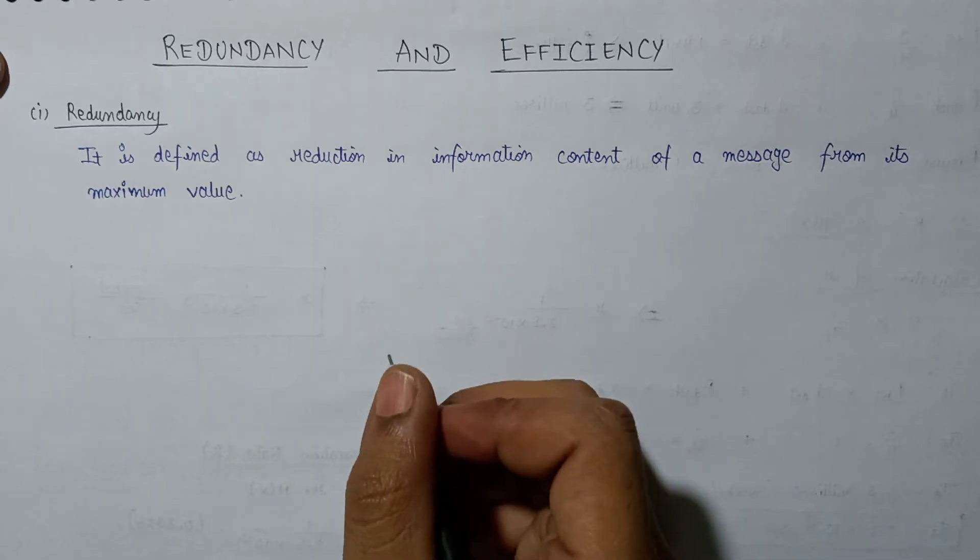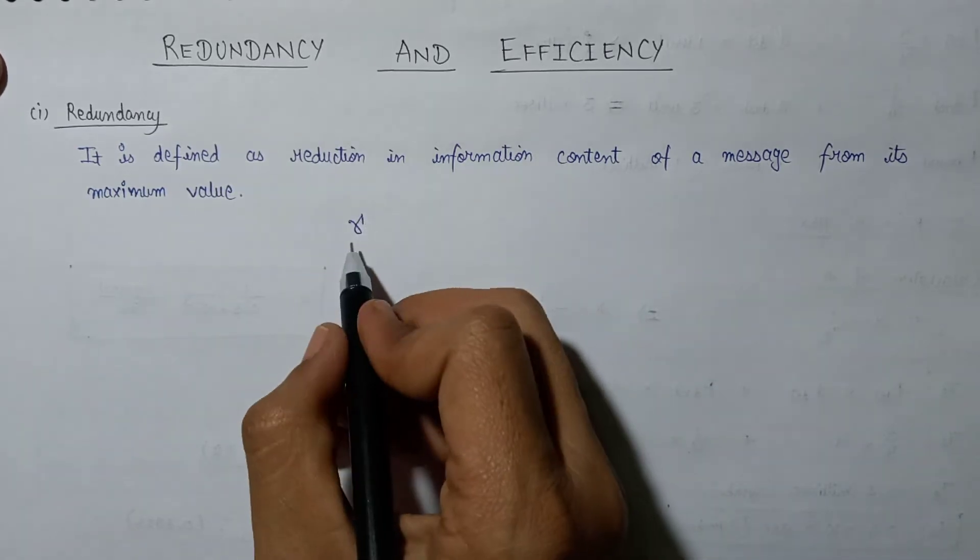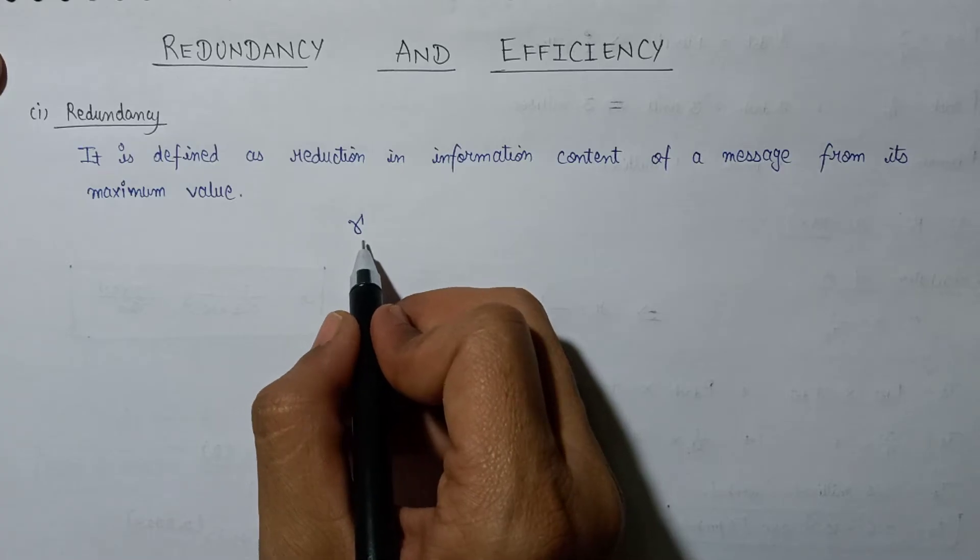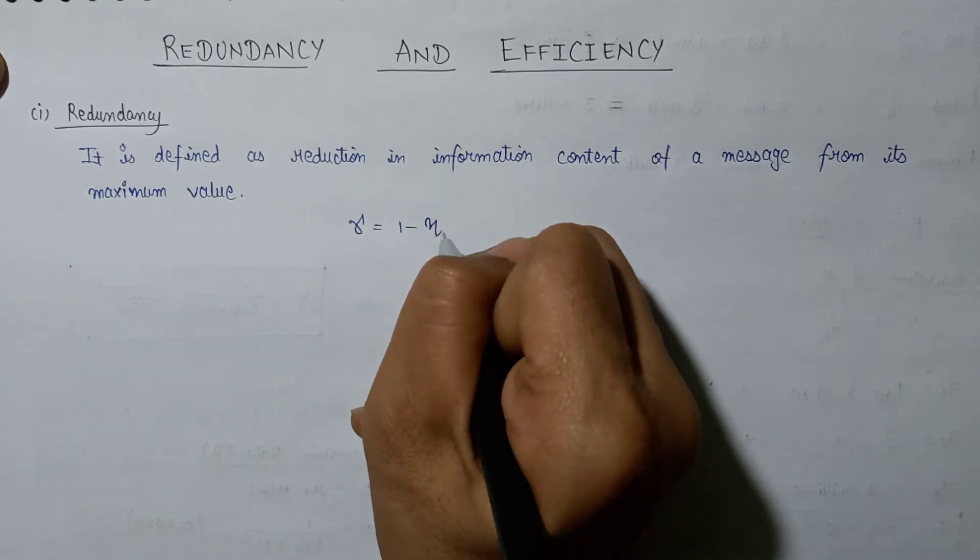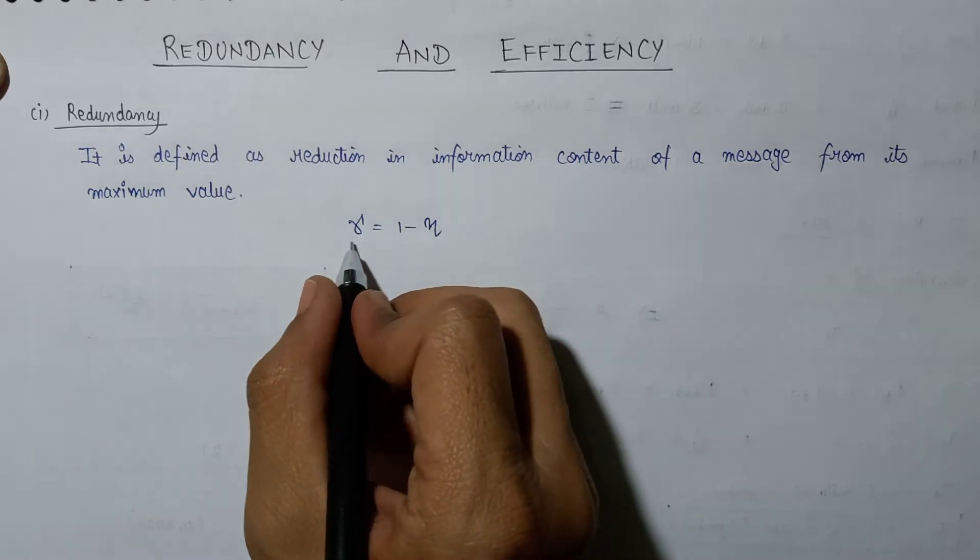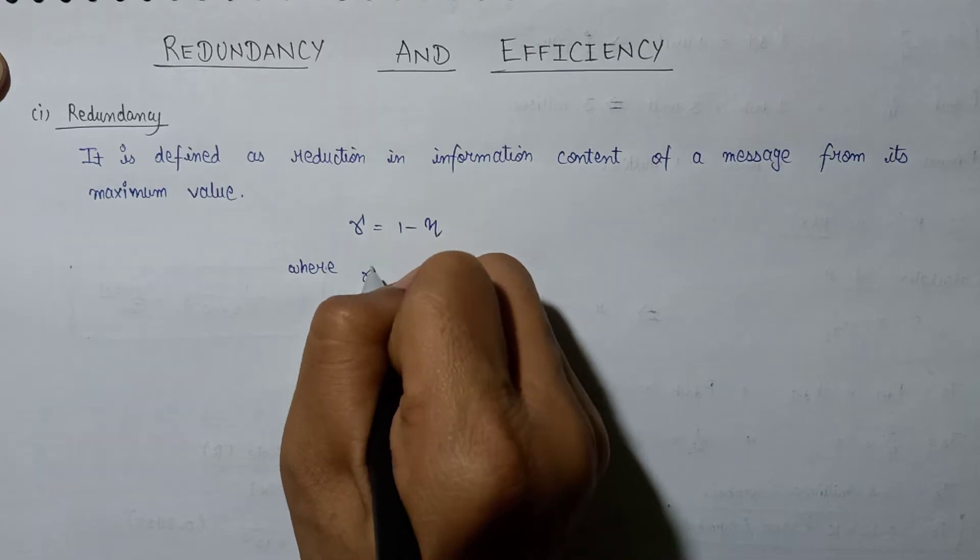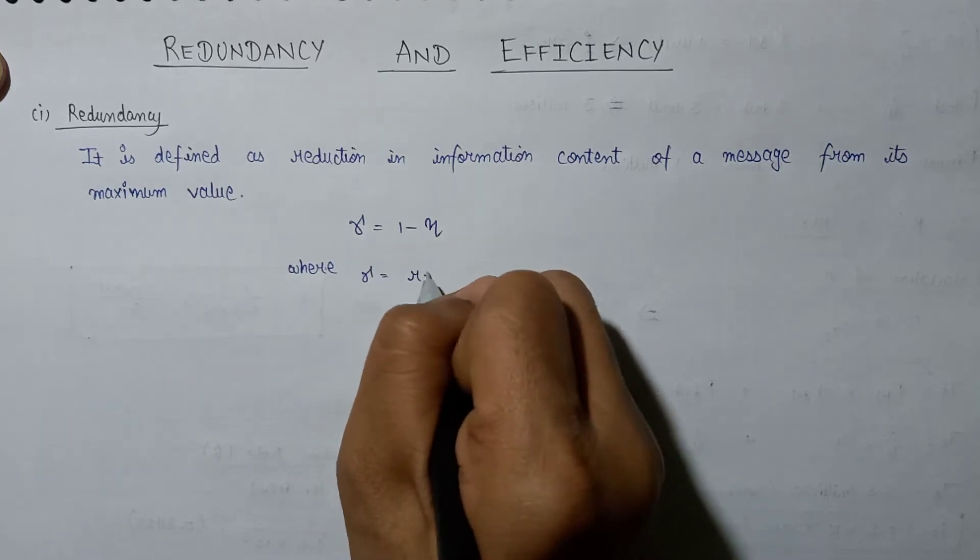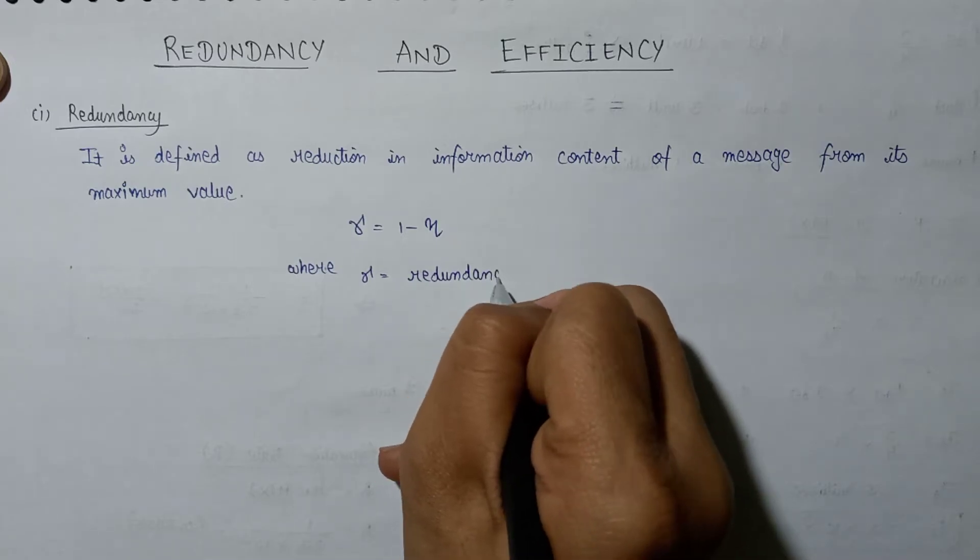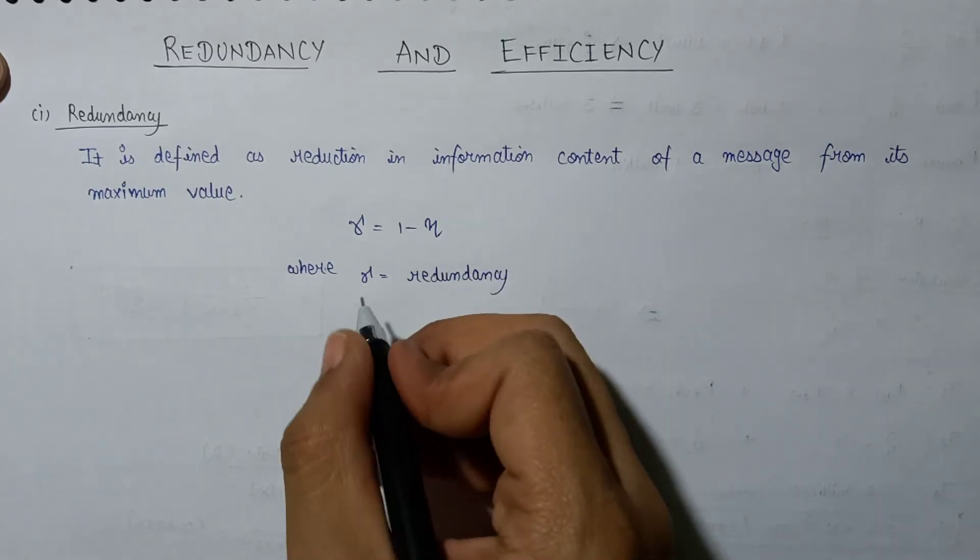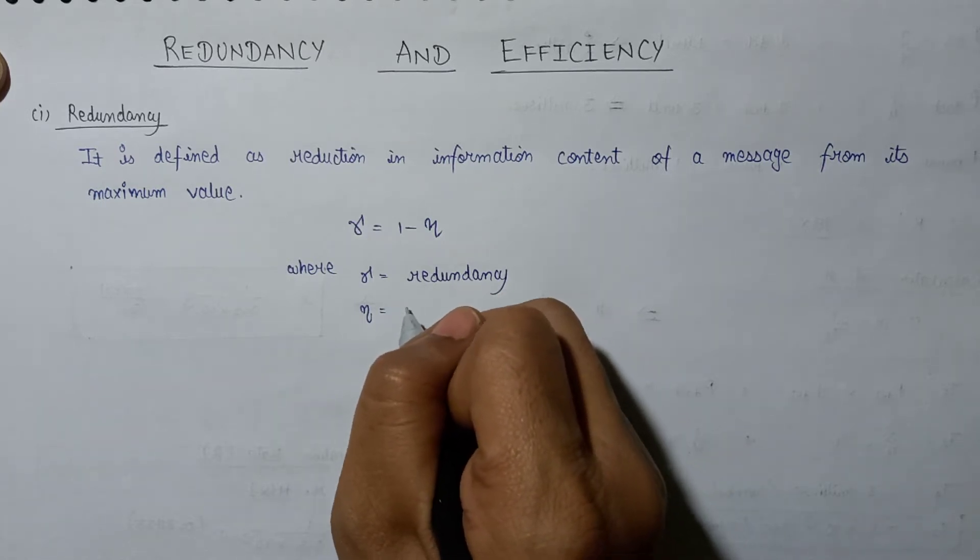Now if we talk about the formula for the calculation of redundancy, the redundancy is represented by the symbol gamma and it equals one minus eta, where gamma represents redundancy and eta represents the maximum efficiency.